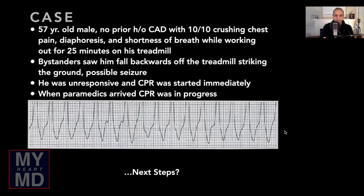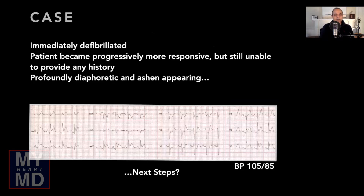Based on this, what do you think the next step should be? They very appropriately thought this was pulseless VTAC and defibrillated him immediately. He became responsive slowly, but was still quite ill-appearing, unable to provide any history at all, and his blood pressure was on the lower side — 105 over 85.